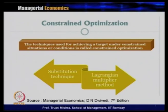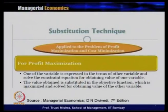To do this constrained optimization, we generally discuss two types of techniques: we will talk about the substitution technique, and later on we will take the Lagrangian multiplier method. Taking the substitution technique, it can be applied to the problem of profit maximization or cost minimization.